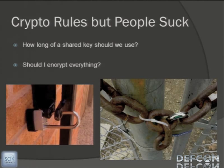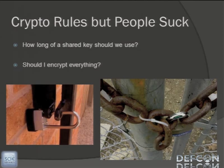People like to argue about how big of keys we should use — 128-bit, 256, 512, all the way up to 4096. That's all great, but you're getting into a battle of how high should we make this fence — two miles high, four miles high, eight miles high? It comes to a point where the attack vector is not going to be the fence any longer. If you have the crypto and the fence is built, people are probably going to try to go around or under the fence.